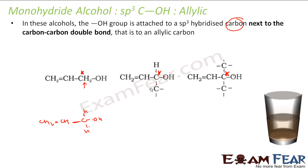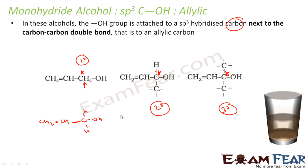You can further classify allylic alcohols as one degree, two degree, or three degree. The star carbon attached to only one carbon is one degree; attached to two carbons is two degree; attached to three other carbons is three degree. So allylic alcohol can be further classified into one degree, two degree, and three degree alcohol.